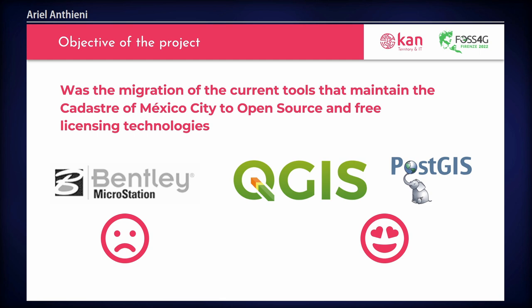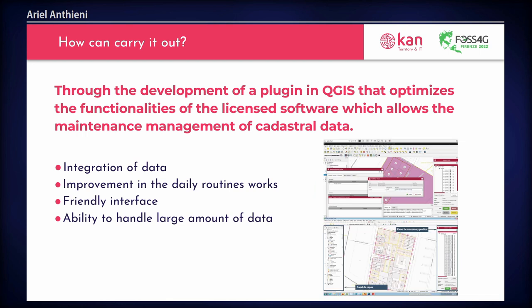It was to complete the process, both alphanumeric and geographic, and to develop new QGIS plugins and integration for PostGIS. So how can we carry it out? Through the development of a plugin in QGIS that optimizes the functionality of the licensing software, which allows the maintenance and management of the cadastral data.